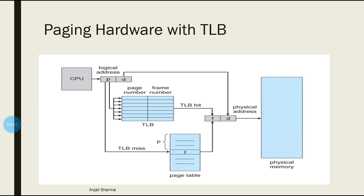When a CPU wants to locate an address or instruction, it generates the logical address — the combination of page number and offset. Instead of checking the page table directly, we first check the TLB to see if it is a recently accessed page. If we find the entry in the TLB, that is a TLB hit. We get the corresponding frame number, combine it with the offset, and refer to the instruction in physical memory.